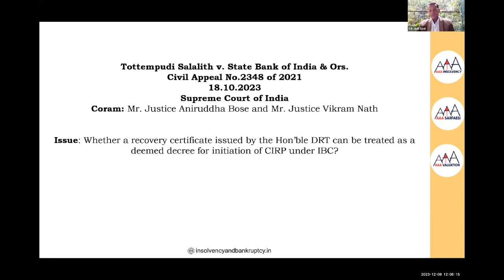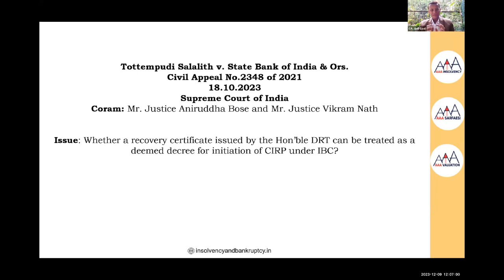On questions about power of attorney properties given as negative lien: the SARFAESI Act is not applicable on a negative lien. A negative lien means the property is not mortgaged — it only means the borrower will not sell it without the lender's approval. On whether a company under CIRP gives the guarantor or property owner immunity from SARFAESI: no — the bank's rights are against the company as well as the individual or property owner. Both can be exercised simultaneously. If recovery happens under SARFAESI first, the claim in the CIRP process will be reduced accordingly.